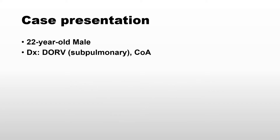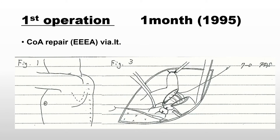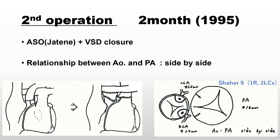The case presentation is a 22-year-old male. He had double outlet right ventricle with sub-pulmonary ventricular septal defect and coarctation of the aorta. The first operation was Professor Sano performing coarctation repair through the left chest with end-to-end anastomosis, successful in 1995. The second operation, two months later, was complete repair via arterial switch operation, VSD closure, with side-by-side relationship of the great arteries and Yamagishi-type coronary artery appearance.